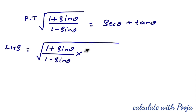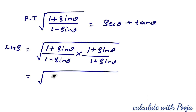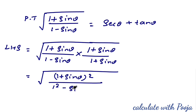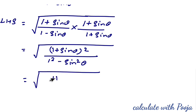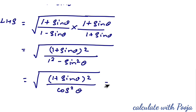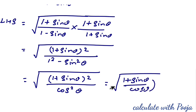Rationalize by multiplying numerator and denominator by (1 + sinθ). This gives √((1 + sinθ)(1 + sinθ) / ((1 − sinθ)(1 + sinθ))) = √((1 + sinθ)² / (1 − sin²θ)). Since 1 − sin²θ = cos²θ, we get √((1 + sinθ)² / cos²θ).